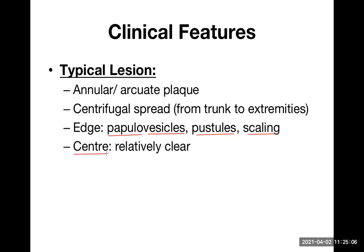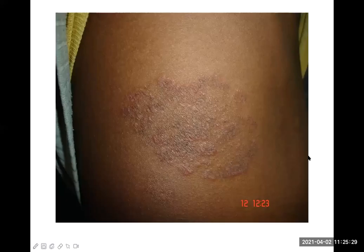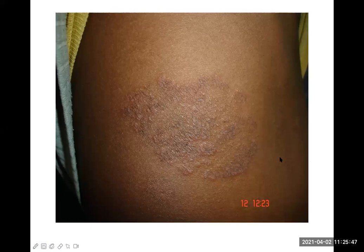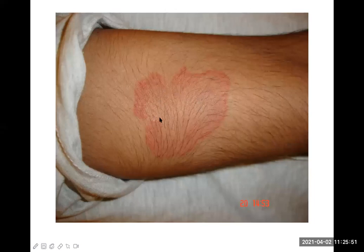An important feature is that the center of the lesion is relatively clear. The lesion is actively growing toward the peripheral part — the center is relatively clear and the peripheral part is involved. Looking at images, the central part of the lesion is clearing while the disease is actively involving the peripheral area, starting from the center and slowly expanding outward.